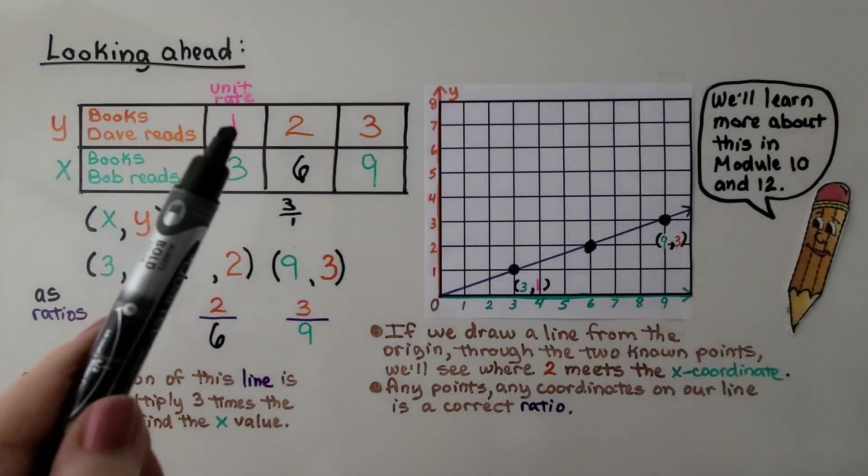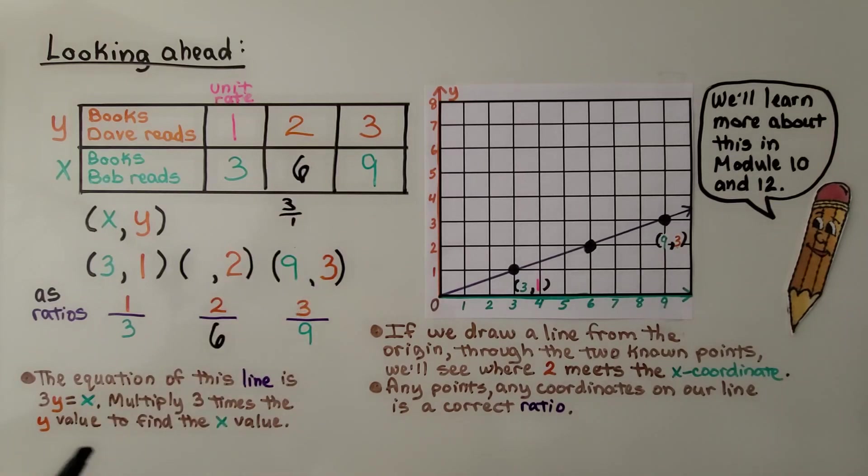3 times the y value will tell us x. 3 times 3 is 9. 1 times 3 is 3. 2 times 3 is 6. So the equation of this line is 3y equals x. We're going to learn more about this in modules 10 and 12.